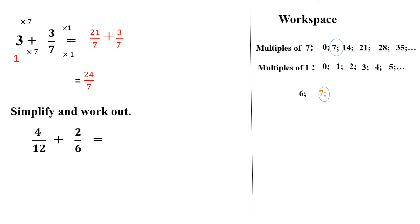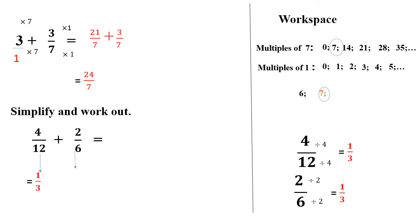Now we have to simplify and work out 4 over 12 plus 2 over 6. We notice that 4 over 12 can be reduced — dividing numerator and denominator by 4 gives 1 over 3. For 2 over 6, dividing by 2 above and below also gives 1 over 3. So instead of writing 4 over 12 plus 2 over 6, we write 1 over 3 plus 1 over 3. We add the numerators and keep the same denominator: 1 plus 1 equals 2 over 3.